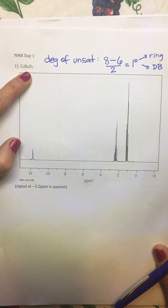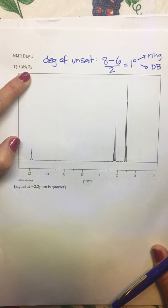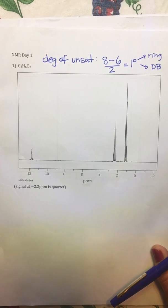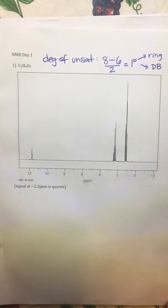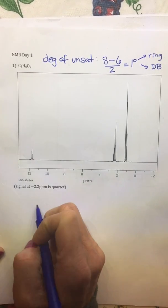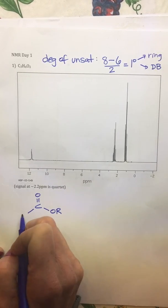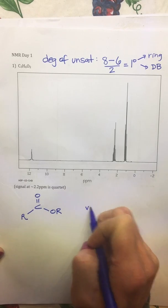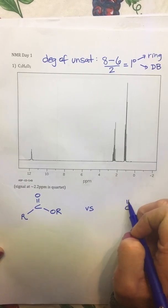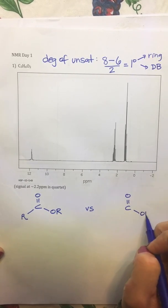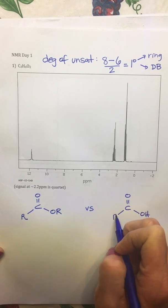Okay, so we've got a couple. We have esters and we also have carboxylic acid. So our ester functional group looks like this, and then we also have a carboxylic acid that looks like this.